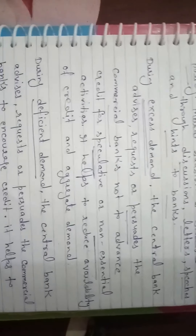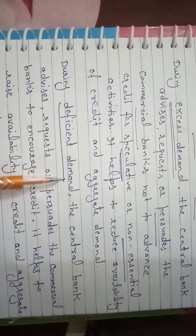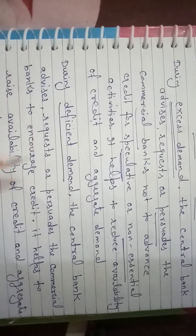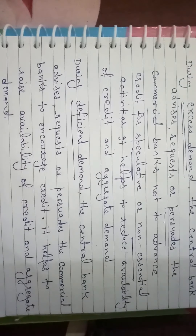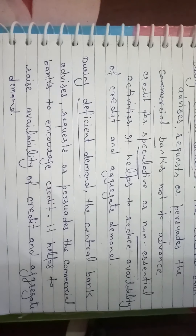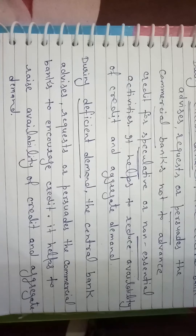During deficient demand, the central bank advises, requests, or persuades commercial banks to encourage credit. This helps to raise the availability of credit and aggregate demand, so that the demand level can increase to the required level.